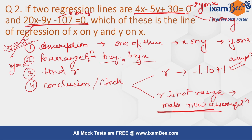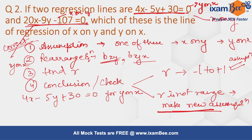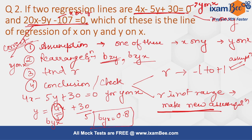I'm not going to solve this question right now but I will tell you the procedure, and I want you to type the right answer in the comments. To find the regression coefficient from one equation — for example, assuming 4x minus 5y plus 30 equals zero is for y on x — you rearrange to solve for y. The value will give you the regression coefficient byx, which is 0.8. You then do the same for the second line and check whether your assumption was correct.